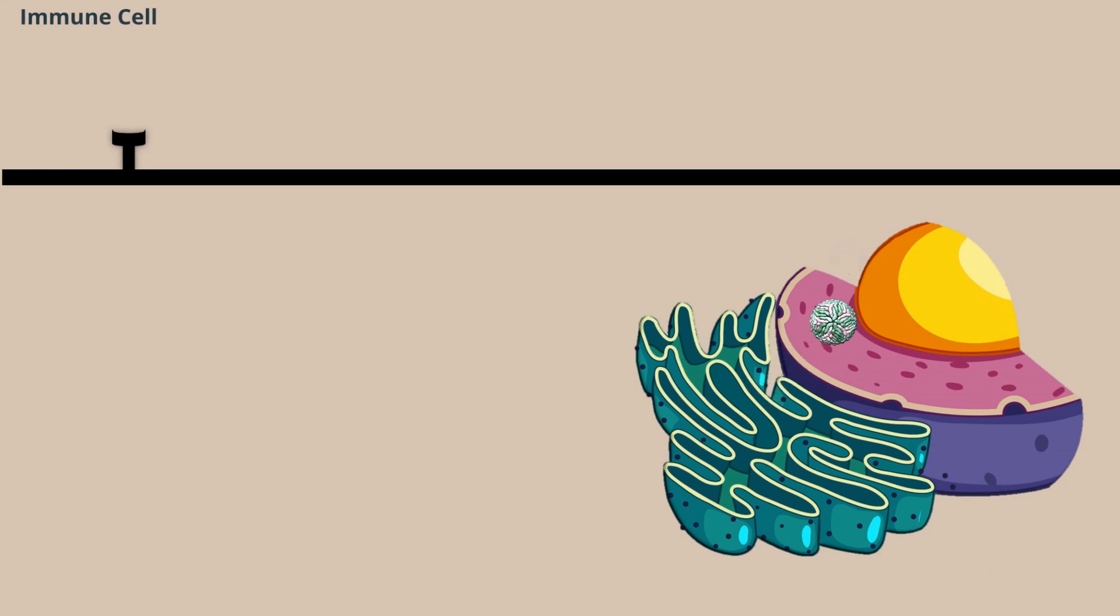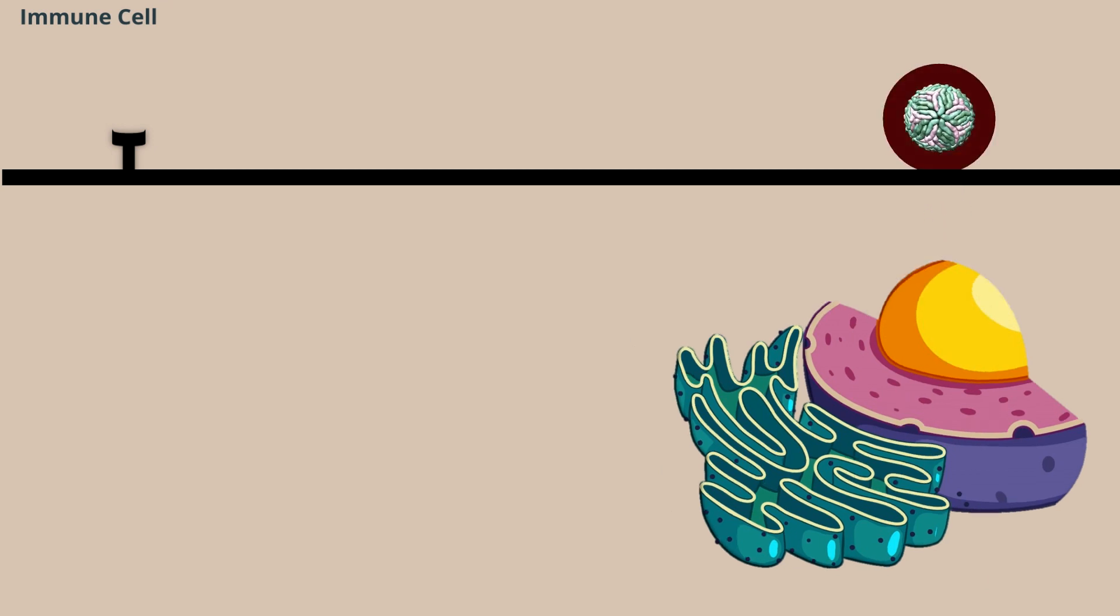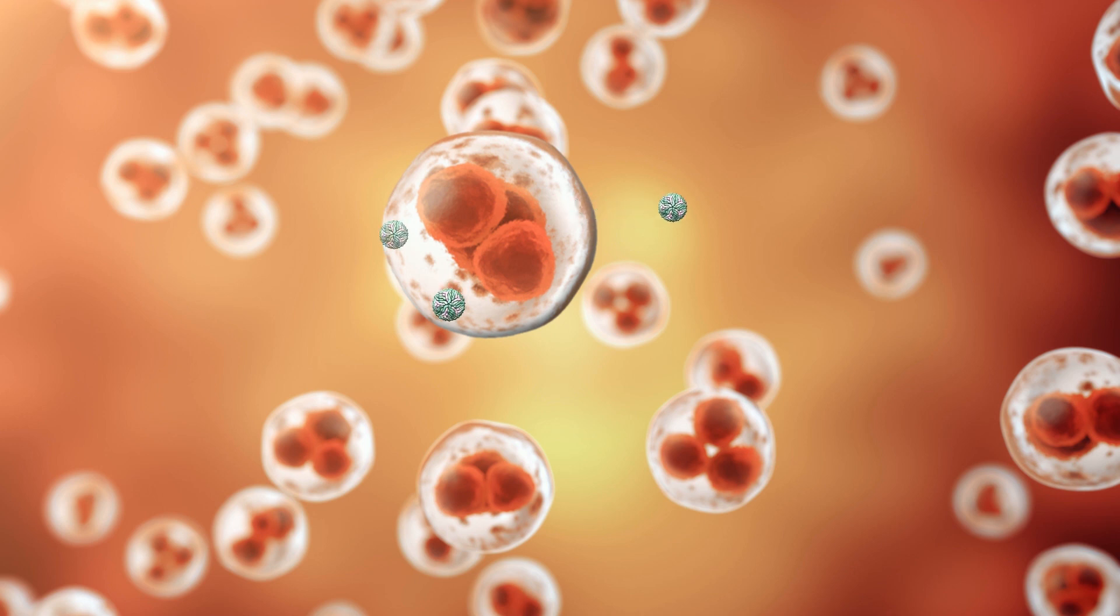The viruses are released from the endoplasmic reticulum and travel via Golgi apparatus to the cell membrane, budding off as numerous infectious agents. A whole lot of viruses are thus released from the immune cells, ready to infect other cells of the body.